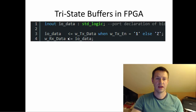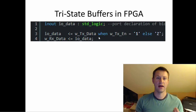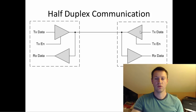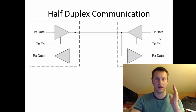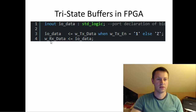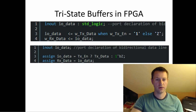On the receive side, you simply assign: 'rx_data <= io_data,' and it receives everything coming in on that line. When your FPGA is transmitting, the rx_data will echo back whatever tx_data sent — but you can just ignore that. When you're listening, rx_data is what matters. So when transmitting, drop the rx data; when receiving, pay attention to it.